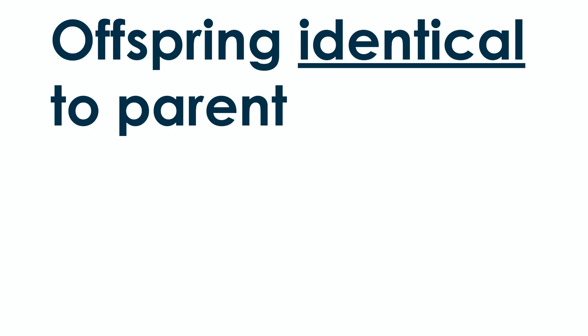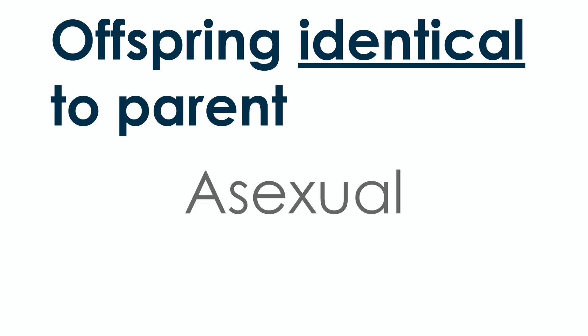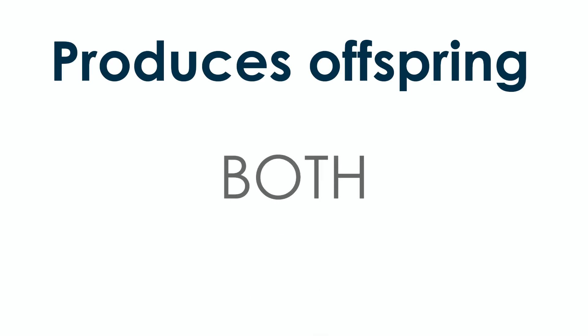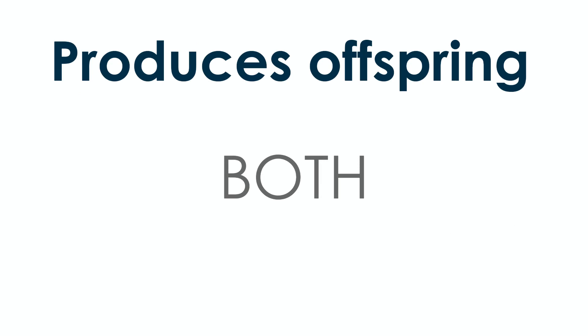If you are identical to your parent, that means you were reproduced asexually, because you only have one set of genes affecting what you look like. Both sexual and asexual reproduction can produce offspring, so that goes in both sides of the Venn diagram.